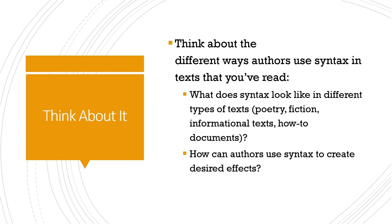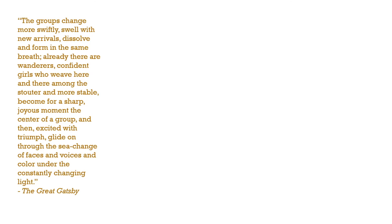Next we'll take a look at some different examples of syntax from different writers. This first example is from The Great Gatsby. It reads: 'The groups change more swiftly, swell with new arrivals, dissolve and form in the same breath. Already there are wanderers, confident girls who weave here and there among the stouter and more stable, become for a sharp joyous moment the center of a group, and then excited with triumph glide on through the sea change of faces and voices and color under the constantly changing light.' In this example we have a very lengthy and descriptive sentence. We see semicolons and conjunctions used to join words and phrases together, and it gives the reader a very vivid vision of the scene. This is one of Gatsby's parties and the syntax really creates a sense of continual movement and motion of the party-goers.